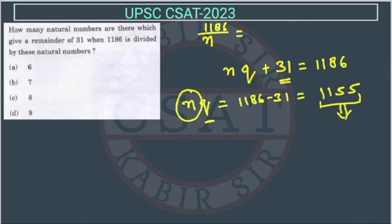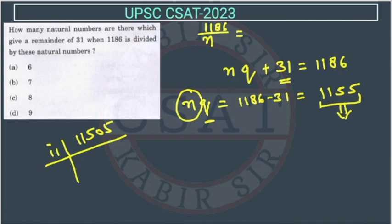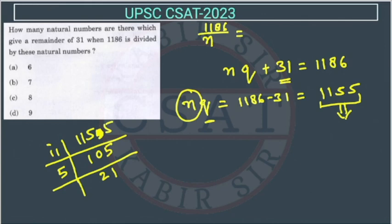We will try to find the factors of 1155. As we do in HCF/LCM, one factor is 11. Dividing further: 11 goes once giving 5, then 5 goes five times, and we get 2 and 1. So the prime factors of 1155 are 3, 5, 7, and 11.